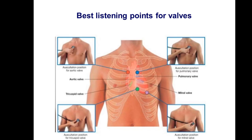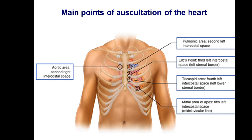There are points of valves. We have four valves and four points of auscultation, plus one additional point (Erb's point). The mitral area is at the apex — fifth intercostal space crossed by the midclavicular line. Tricuspid valve area is at the fourth left intercostal space or lower left sternal border. Aortic area is at the second intercostal space, right side of the sternum. Pulmonary area is at the second intercostal space, left side of the sternum. Erb's point is at the third left intercostal space — an additional point to auscultate the aorta.